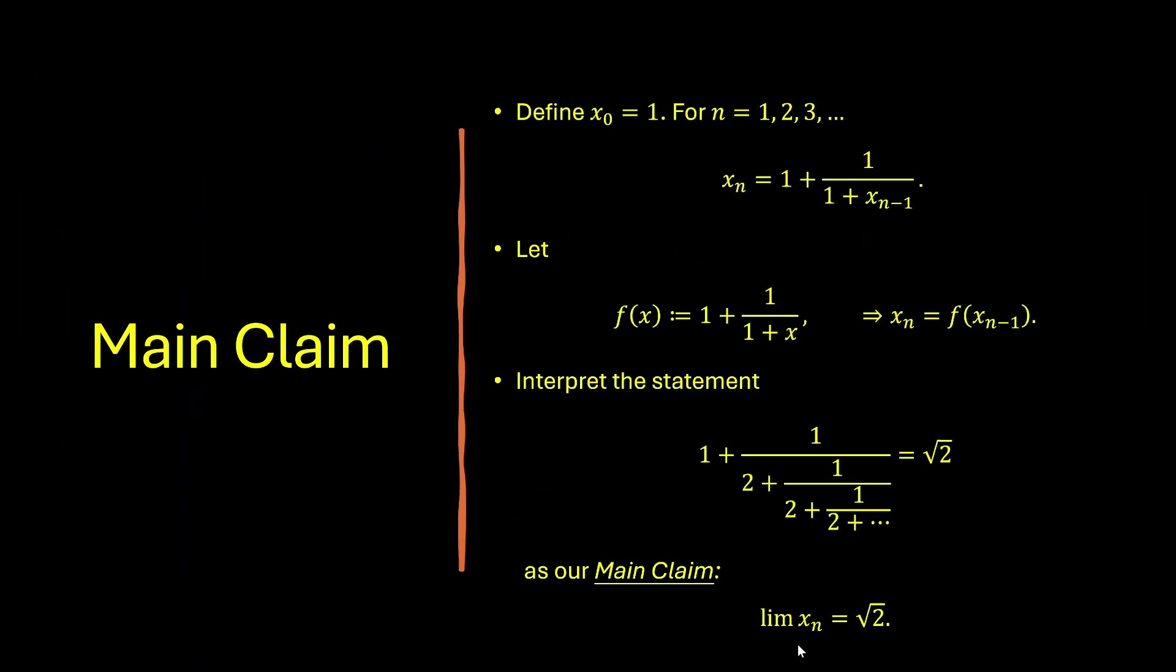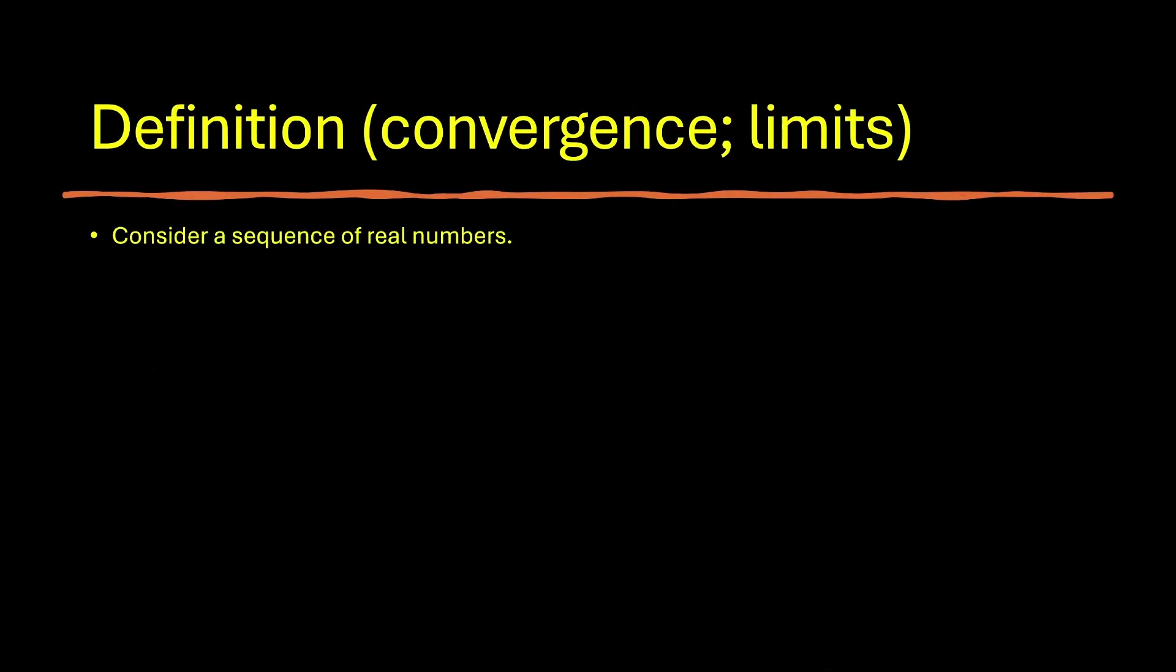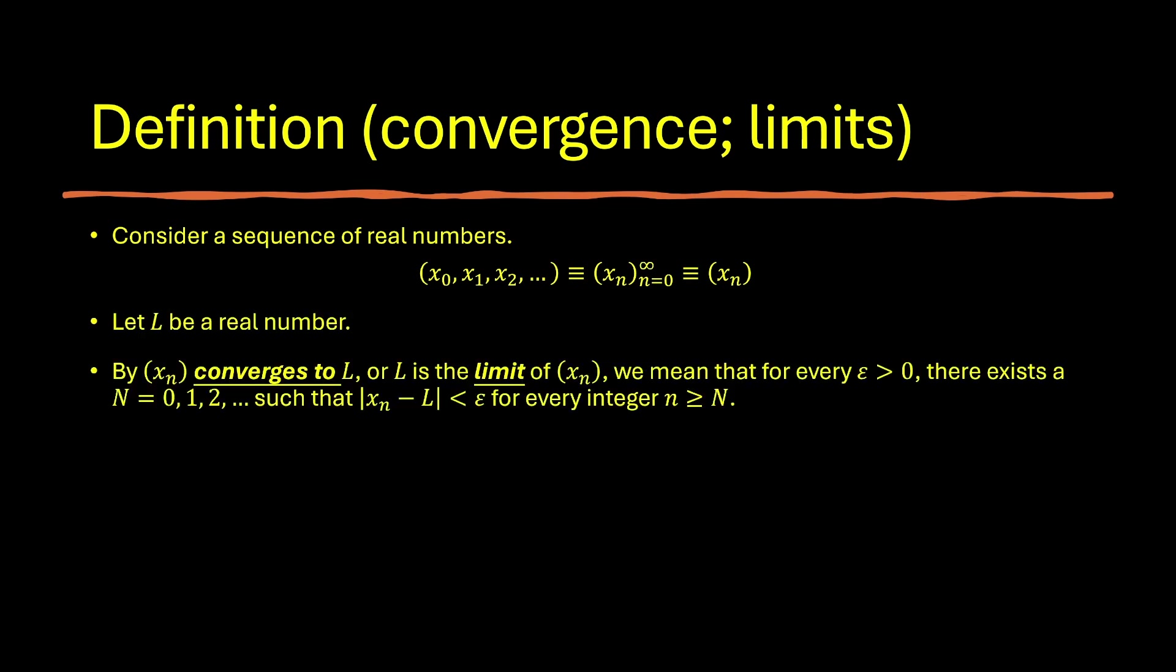And we're now ready to formalize things. Because our main claim says the limit of xn equals the square root of 2, first we need to define what we mean by limits. Consider a sequence of real numbers, x0, x1, x2, and so on, which can be abbreviated as xn, n goes from 0 to infinity, or simply just xn. And also we let l to be a real number. By xn converges to l, or l is the limit of xn, we mean that for every epsilon greater than 0, there exists a non-negative integer capital N such that the absolute value of x little n minus l is less than epsilon for every integer little n greater or equal to big N.